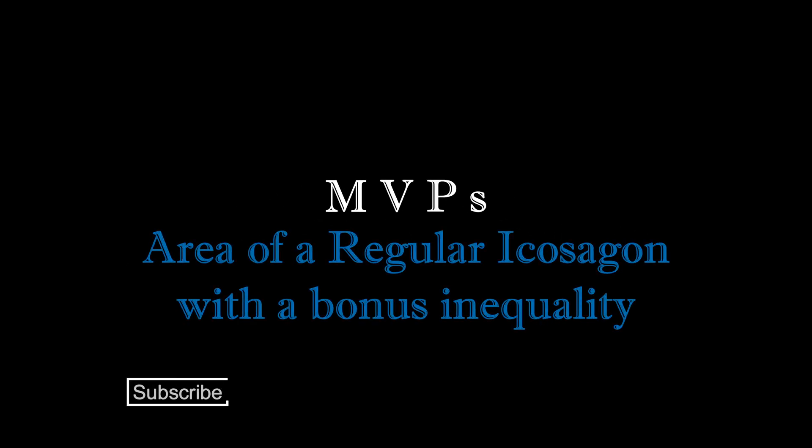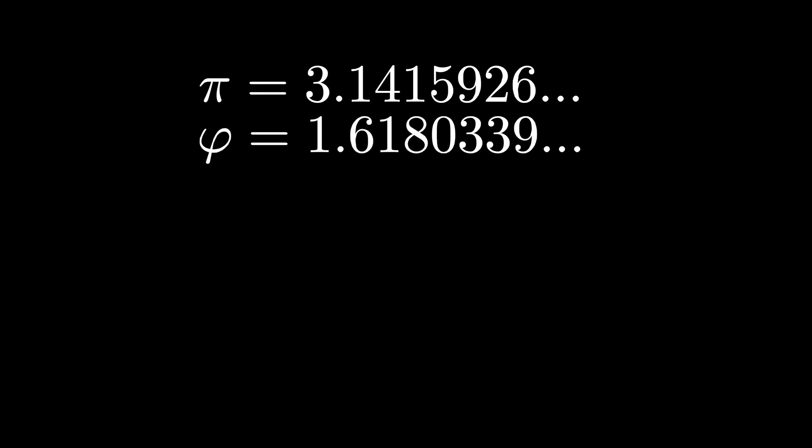Let's find an area for the regular icosagon and use that to prove an interesting inequality relating the golden ratio and pi. The circle constant pi is approximately 3.14159. The golden ratio phi is approximately 1.61803. Here's an interesting question about these two famous constants. Is pi times the golden ratio greater than or less than 5?